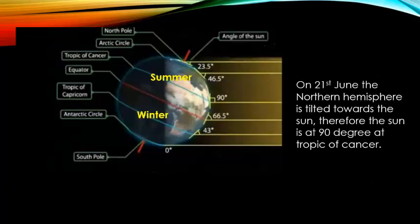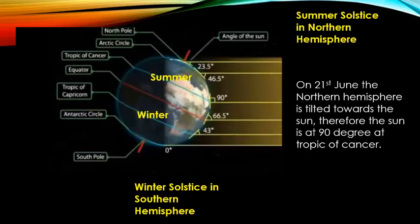On 21st June, the Northern Hemisphere is tilted towards the sun, therefore the sun is at 90 degrees at the Tropic of Cancer. This is the summer solstice in the Northern Hemisphere and winter solstice in the Southern Hemisphere.